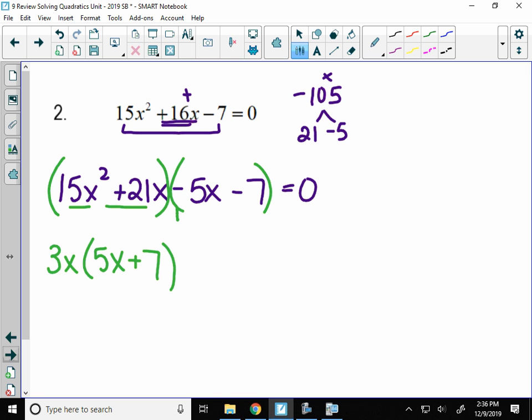Over here, my third term is negative, so my GCF is going to be negative. And the only number those both have in common is negative 1. When I divide that by negative 1, I get 5x plus 7, which is good because both those factors are the same.